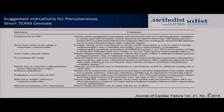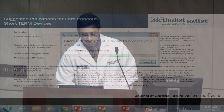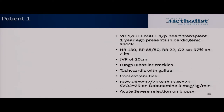Suggested indications for percutaneous short-term devices include ACS, complications of ACS, and severe heart failure. The key aspects of using temporary mechanical circulatory support in cardiogenic shock are: timing — early initiation; level of support — adequately perfusing all organs; and prevention and management of potential device-related complications. With this introduction, we'll get into the cases.